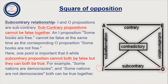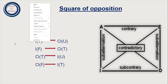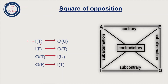I and O cannot be false together, but they can both be true. For example, 'Some nations are democracies' and 'Some nations are not democracies' can both be true together. Regarding truth values: if I is true, then O is undetermined — it can be true or false. If I is false, then O must be true. Similarly, if O is true then I is undetermined, and if O is false then I is true, because both cannot be false together.